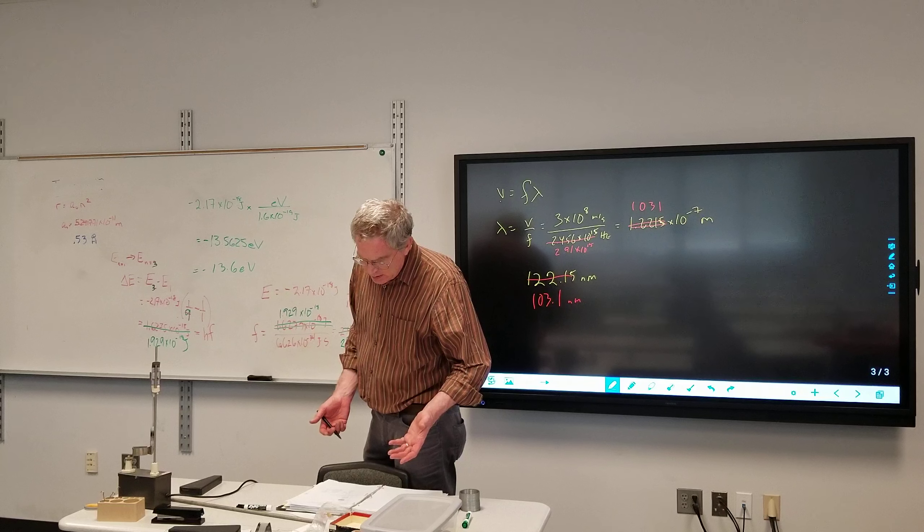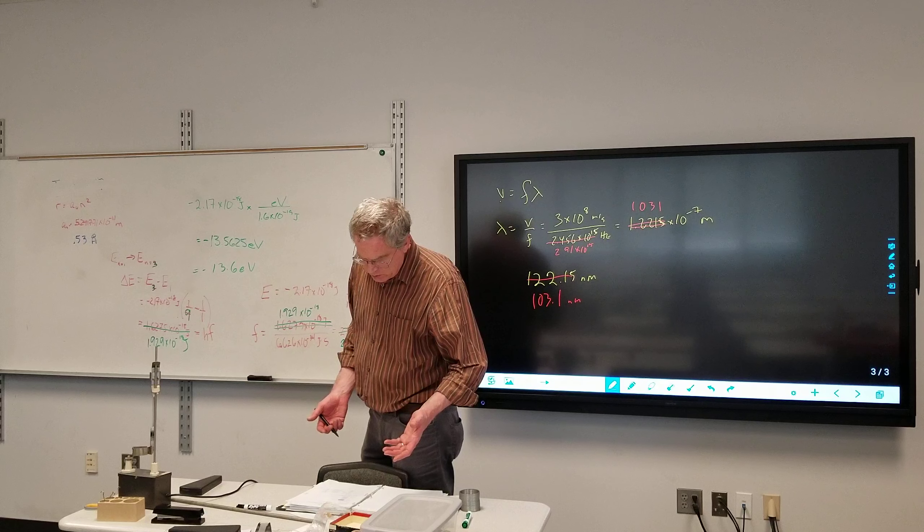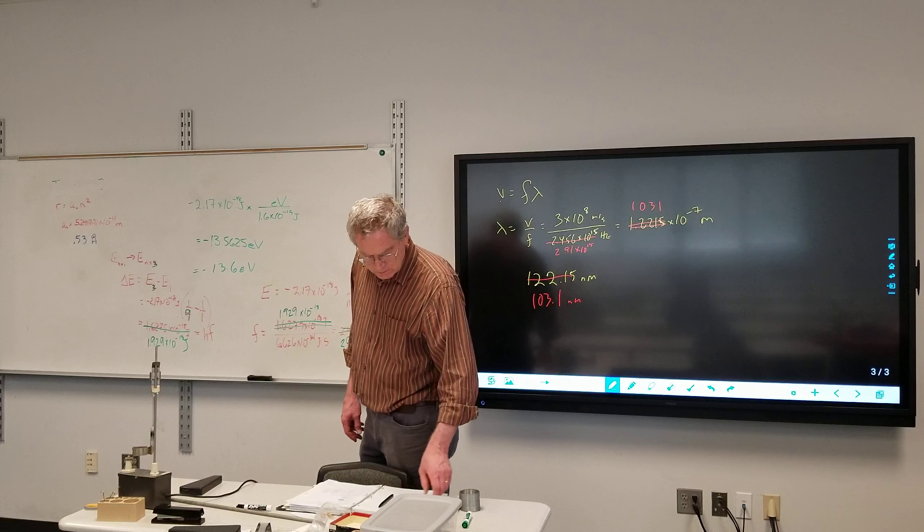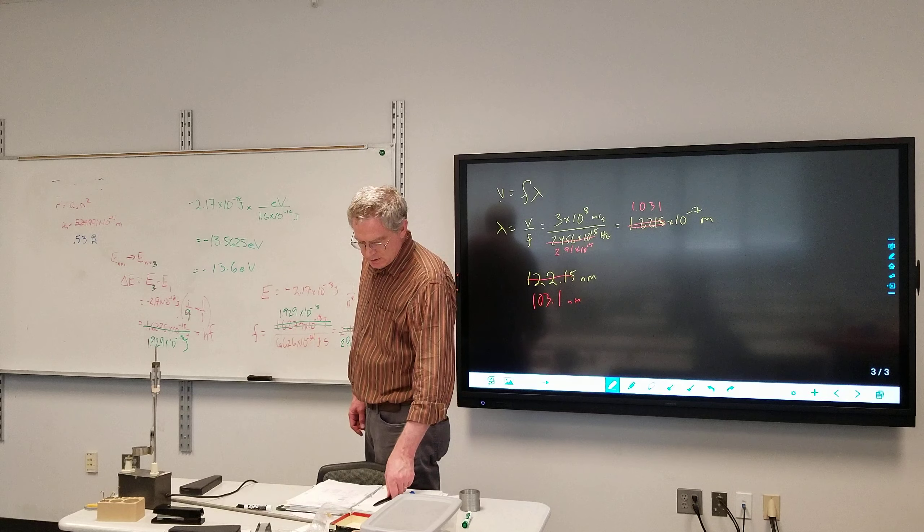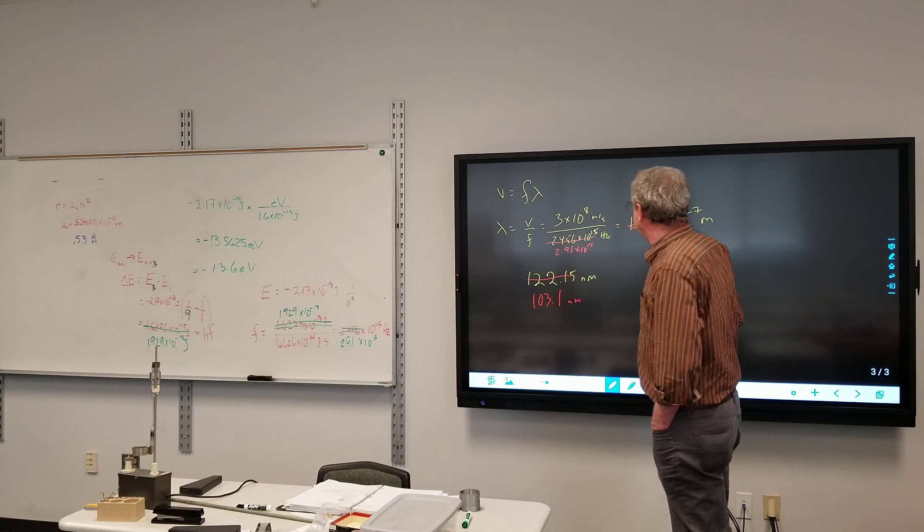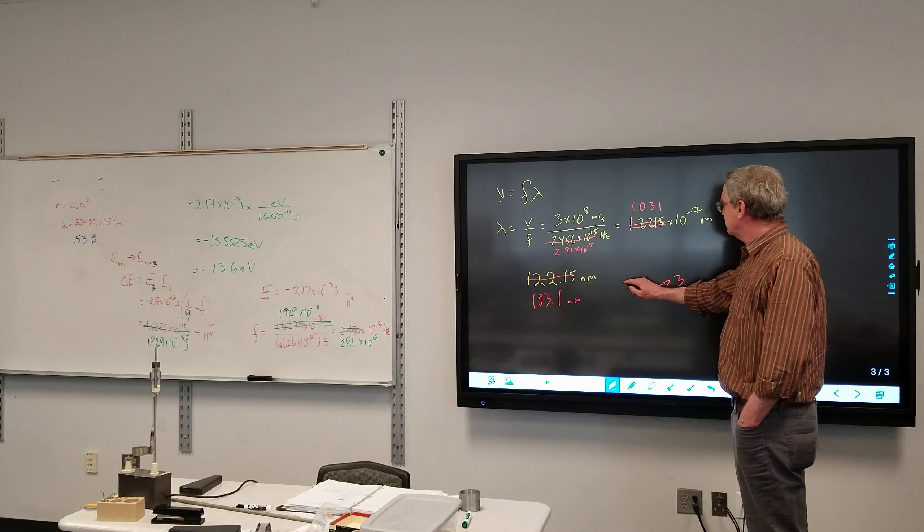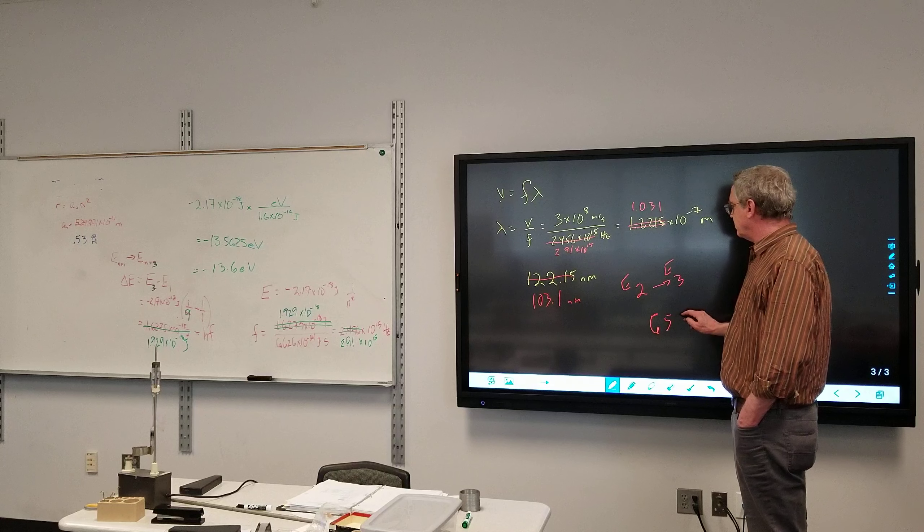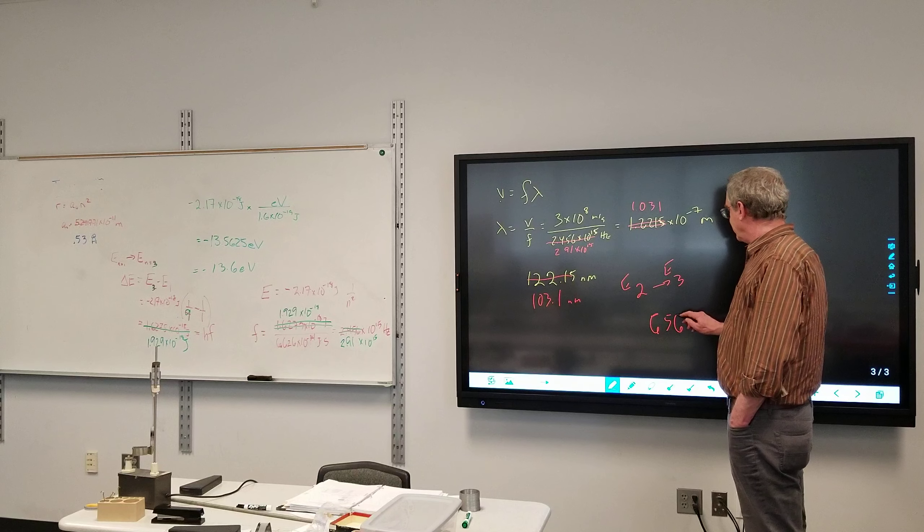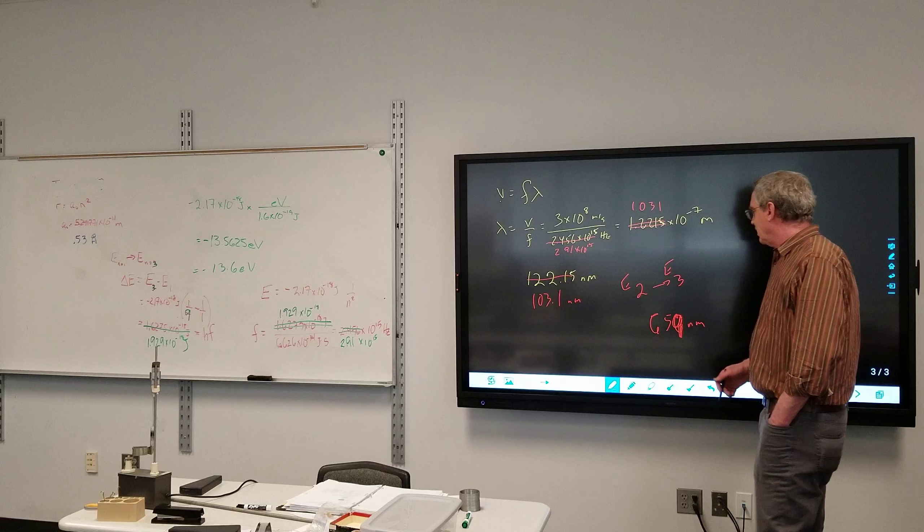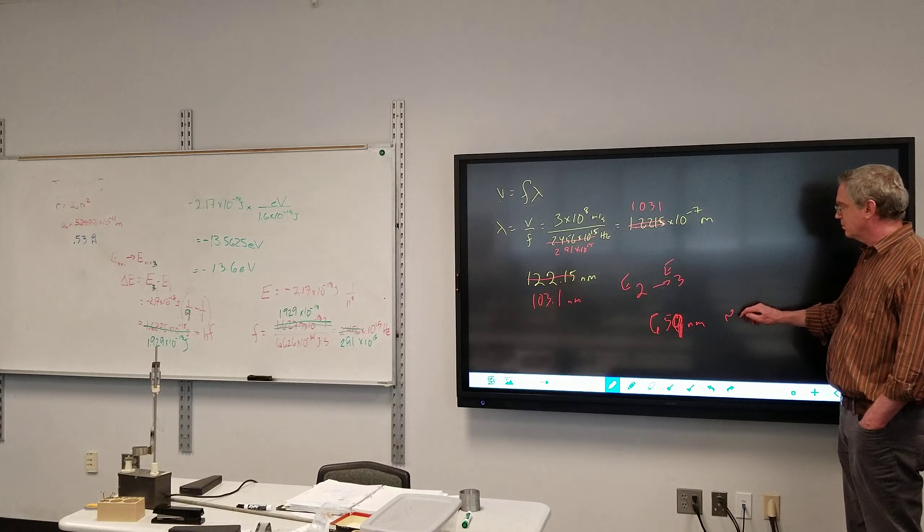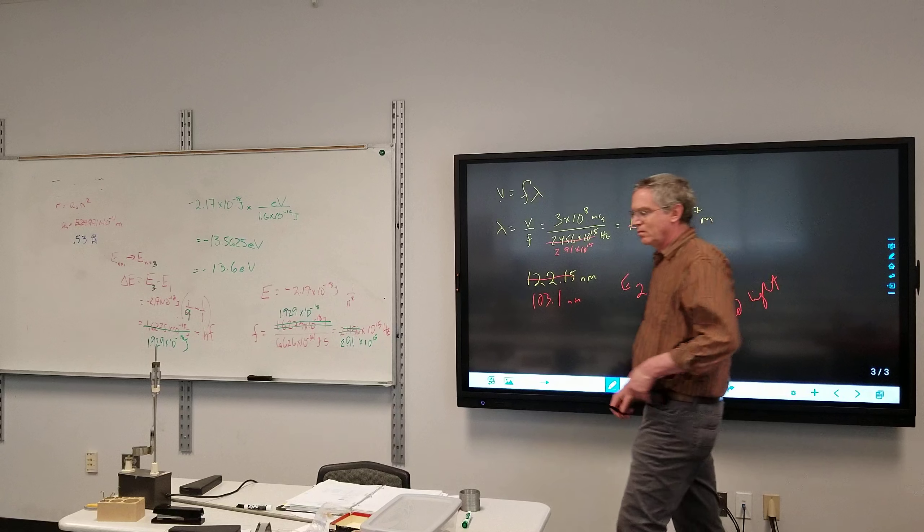Let's see if I can actually... Because the Balmer series should be visible light. So, second level to... Let's do second to fourth. Second to third gave me 6.595 to the negative 7th. So, if we go from the second to third level, E2 to E3, we end up with 656 nanometers-ish. 659, technically 660. Which puts it in, appropriately, for the color I guess you guys chose red.